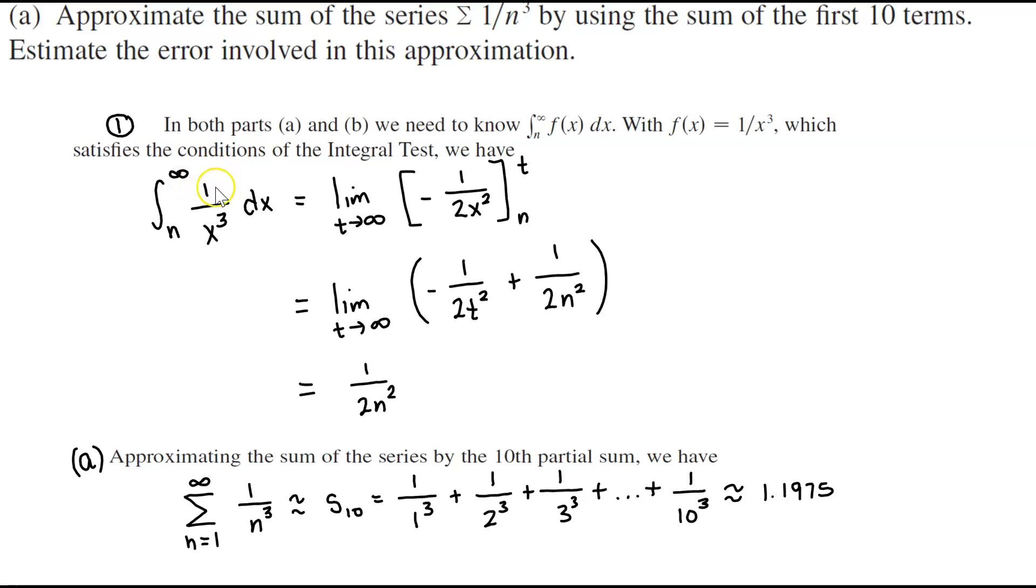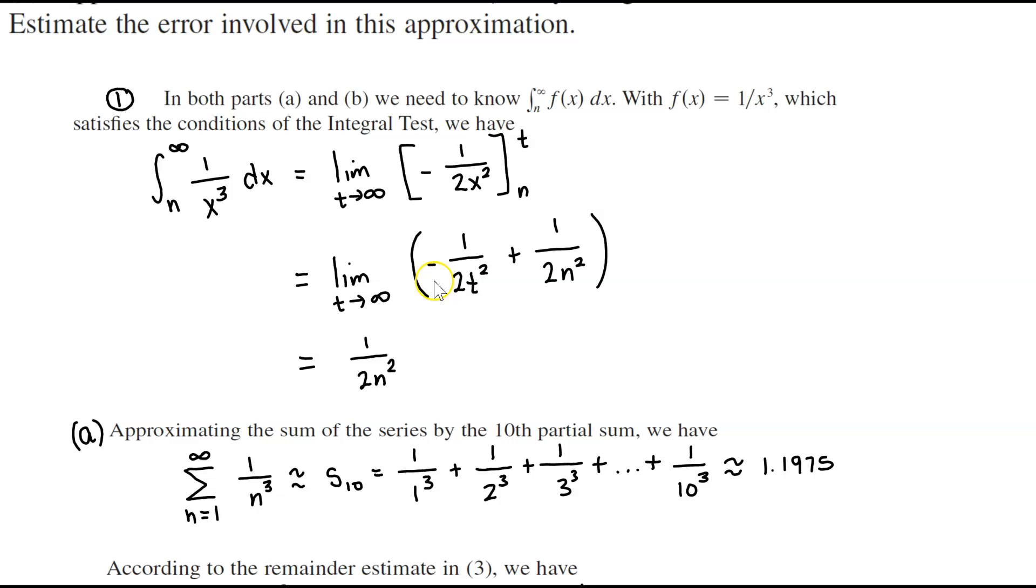So we have the function 1 over x cubed going from n to infinity dx is equal to the limit as t approaches infinity, which is the antiderivative becomes negative 1 over 2x squared going from n to t. Now evaluating it from n to t, we get the limit as t approaches infinity of negative 1 over 2t squared plus 1 over 2n squared, which is equal to 1 over 2n squared.